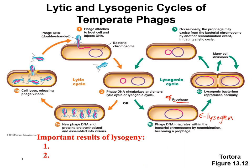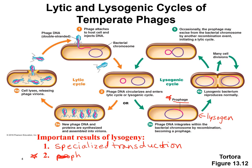There are two important results of temperate bacteriophages doing the lysogenic cycle. One we've already talked about is specialized transduction, which is a form of horizontal gene transfer. The other result, something new, is called phage conversion.